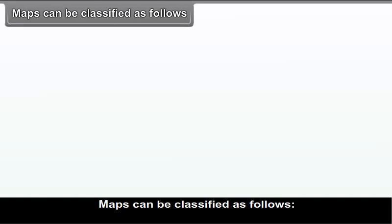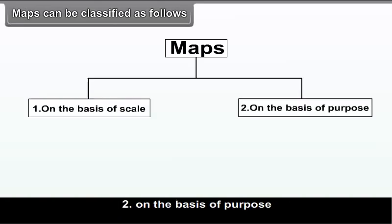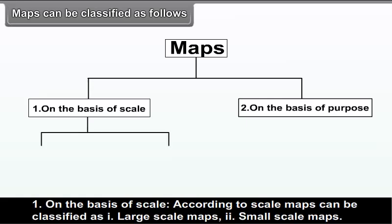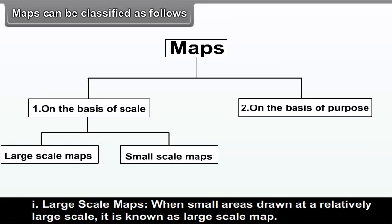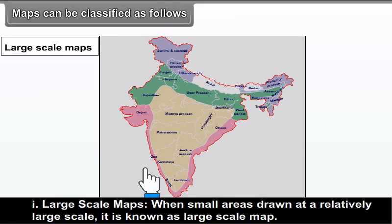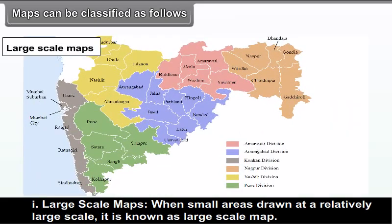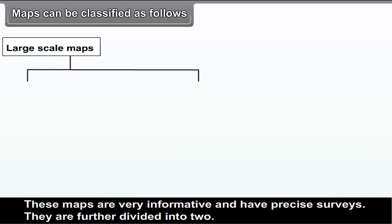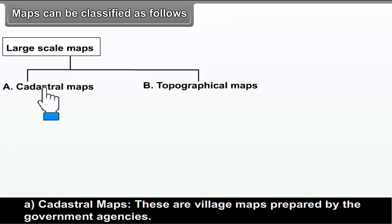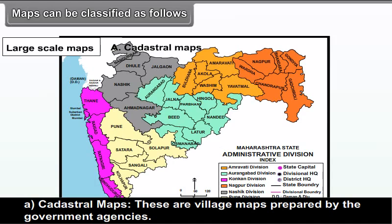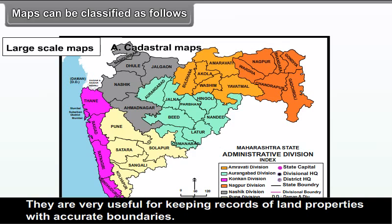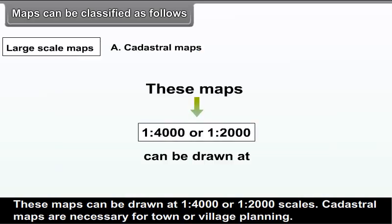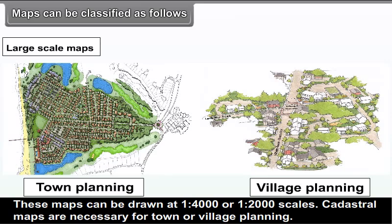Maps can be classified on the basis of scale into large-scale maps and small-scale maps. When small areas are drawn at a relatively large scale, it is known as a large-scale map. These maps are very informative and have precise surveys, and are further divided into two types. Cadastral maps are very useful for keeping records of land properties with accurate boundaries, drawn at 1:4000 or 1:2000 scales, and are necessary for town or village planning.